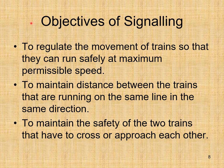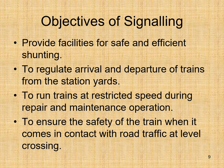Objectives of signaling: to regulate the movement of trains so they can run safely at maximum permissible speed; to maintain distance between trains running on the same line in the same direction; to maintain safety of two trains that have to cross or approach each other; and to ensure safety when a train comes in contact with road traffic at a level crossing.